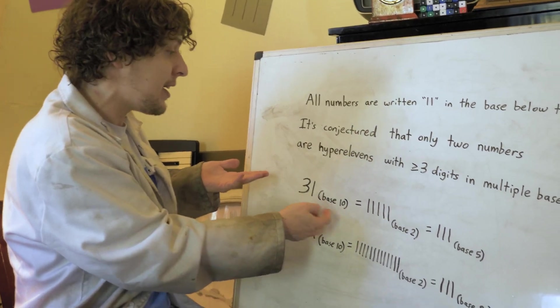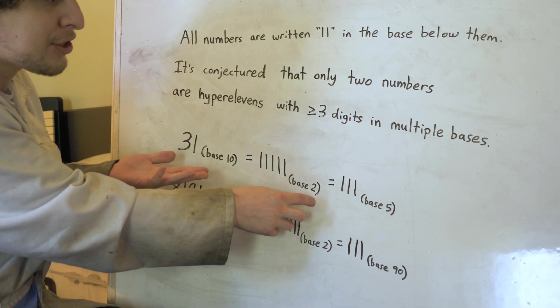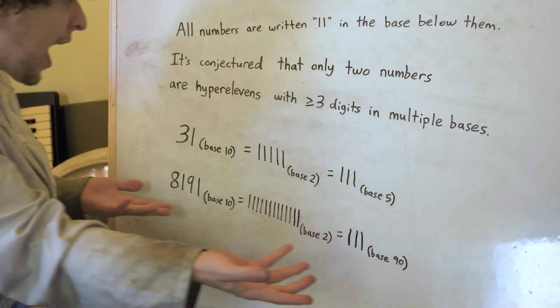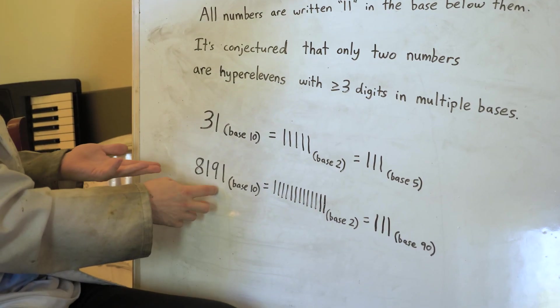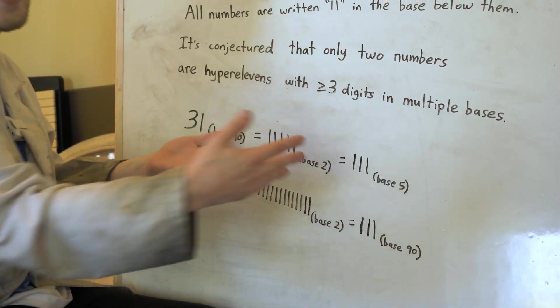Well, 31 can do it. 31 things can be written as five ones in base two or three ones in base five. 8,191 things can be written as that in base two or that in base 90.